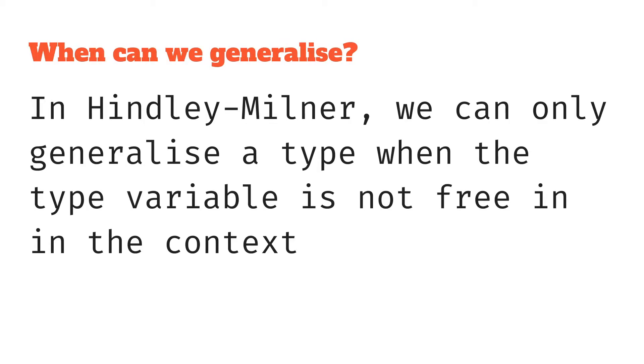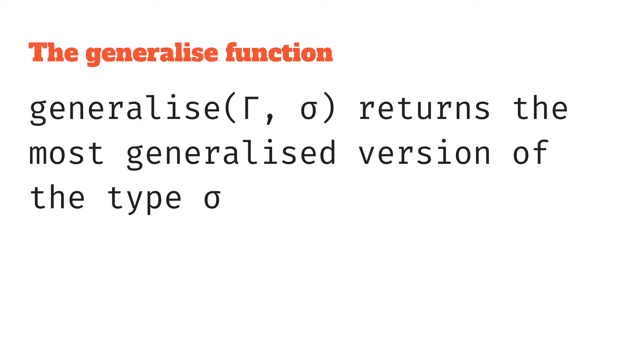We are often working within a context, a type in context. So in Hindley-Milner we can only generalize a type when the type variable is not free in the context. With that knowledge we can define the type signature for our function. Generalize takes a context and a type and returns the most generalized version of the type. That's basically going to add all our for all quantifier type variables that are free in the type sigma but not free in the context gamma.